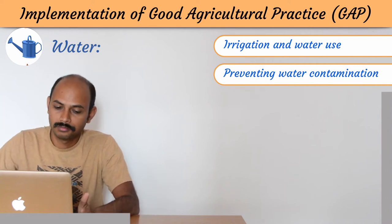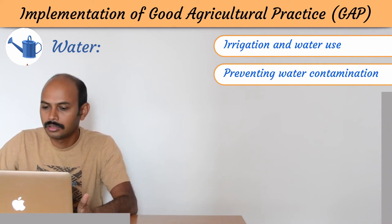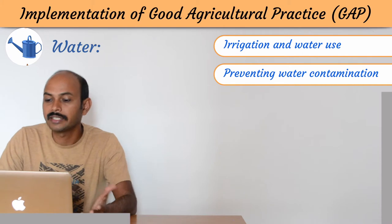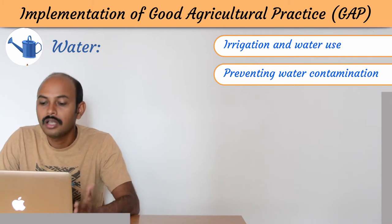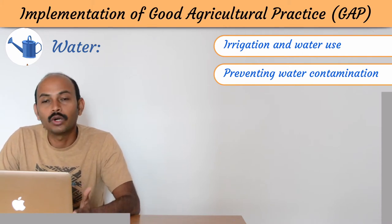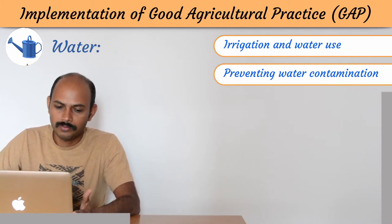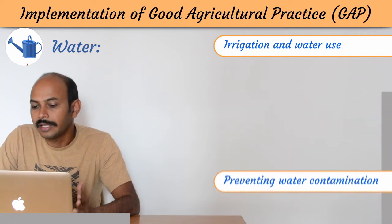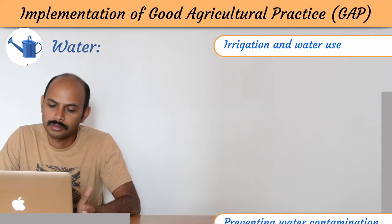Next comes water. Water is very important and it is divided into two parts: irrigation and water uses, and preventing water contamination. Let's talk about the first one — irrigation and water uses.